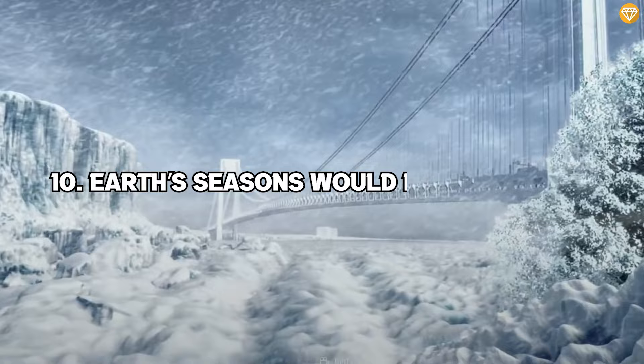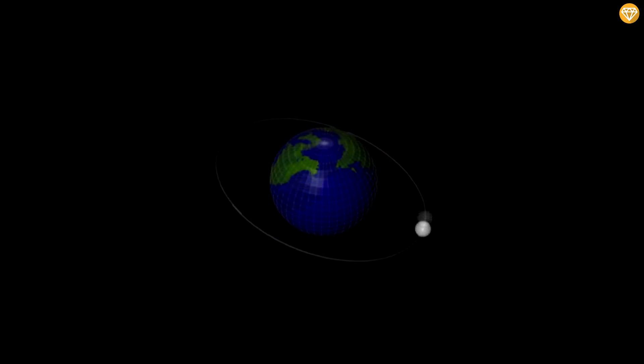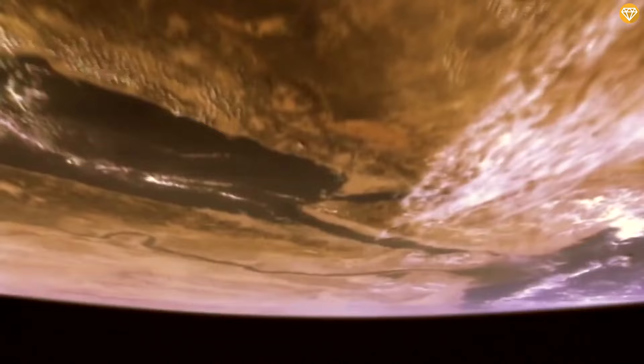10. Earth's seasons would become crazy. The Earth's rotation on its axis is tilted at about 23.4 degrees, which remains constant throughout the year. This axial tilt leads to variations in the amount of sunlight and heat received by the northern and southern hemispheres, resulting in the annual seasons.